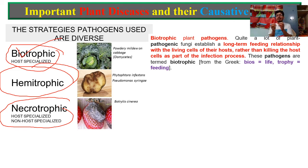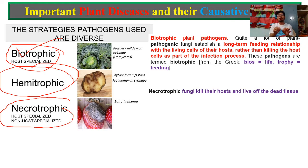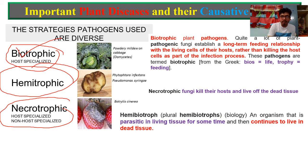The next type is necrotropic. Necrotropic fungi kill their host and then live off on the dead tissue. So necrotropic is that class of fungi that kill the host and then live on the dead tissues. That is again very important.